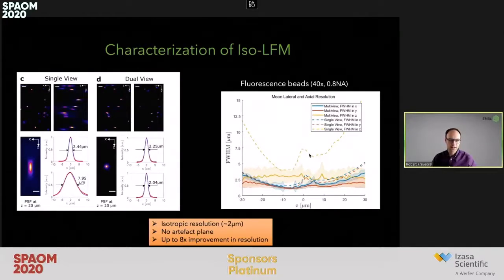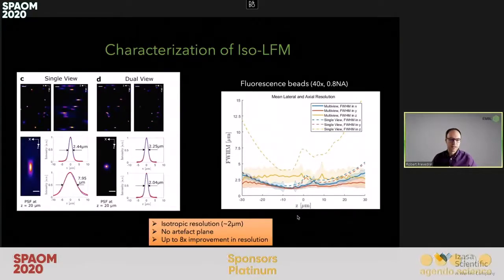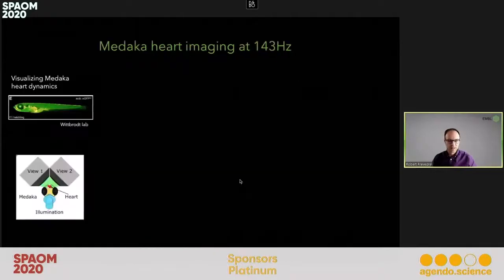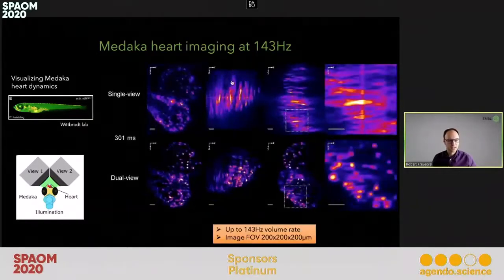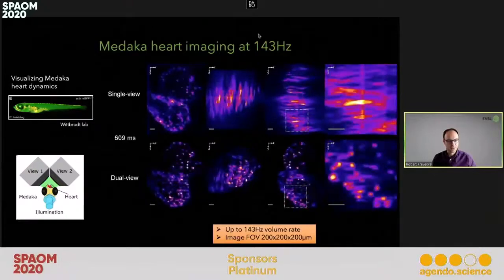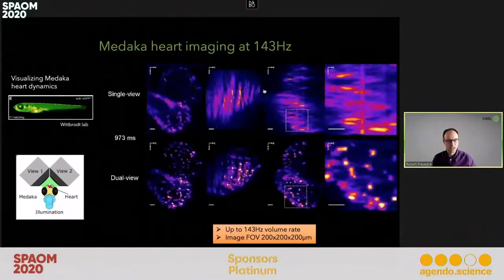There is no worse resolution at the native image plane, and the improvement can be up to eightfold, especially at the edges of the imaging volume. We then worked with biologists, taking one of the most dynamic and challenging samples: the beating Medaka heart, here imaged at a frame and volume rate of more than a hundred hertz.